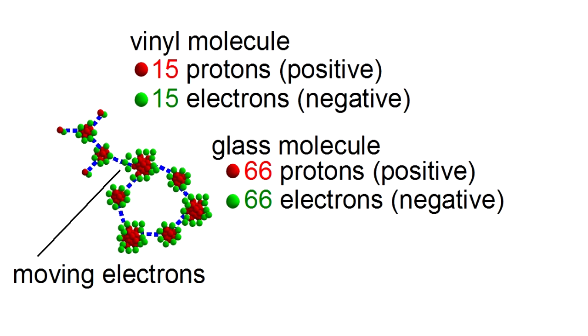when the bond is formed, electrons move from the glass molecule to the vinyl molecule. In this case, three electrons are changing places. As a result, the vinyl now has 18 negative electrons, since that's where the three electrons went. And the glass now has 63 electrons, since that's where the electrons came from.